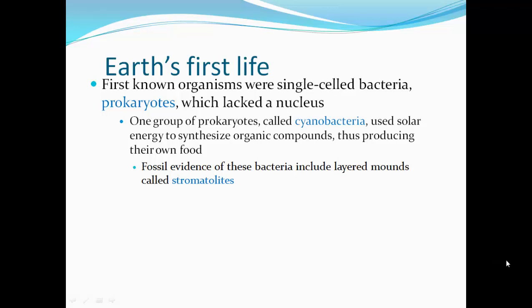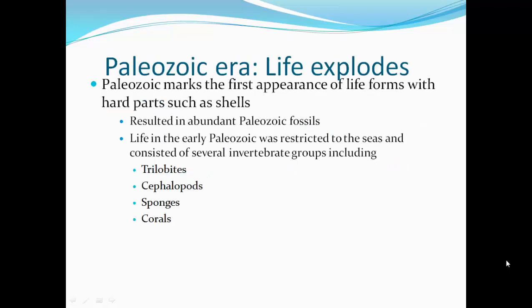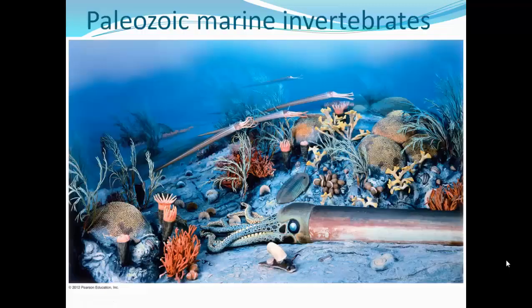Earth's first life: the first known organisms were single-celled bacteria — prokaryotes — which lacked a nucleus. One group of prokaryotes, called cyanobacteria, used solar energy to synthesize organic compounds, producing their own food. Fossil evidence of these bacteria includes layered mounds called stromatolites. The Paleozoic marks the first appearance of life forms with hard parts such as shells, resulting in abundant Paleozoic fossils. Life in the early Paleozoic was restricted to the seas and consisted of several invertebrate groups, including trilobites, cephalopods, sponges, and corals.